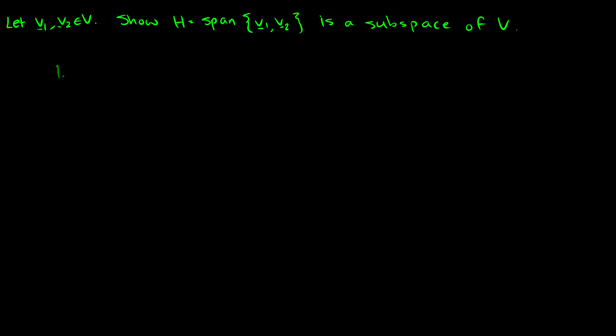First, is the zero vector in the subspace? If we take zero times V1 plus zero times V2, then of course this is going to be in our subspace H. So the first condition is satisfied.